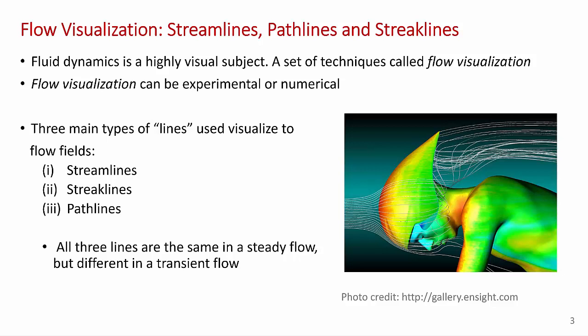There are three main types of lines used to visualize flow fields. These are streamlines, streaklines, and pathlines. Now, it turns out that all three of these lines follow the same path. They're exactly the same in a steady flow, but they can be substantially different in a transient flow. Fluid dynamics is a highly visual subject, and I think you'll find the images that I'm going to show in this presentation quite interesting.